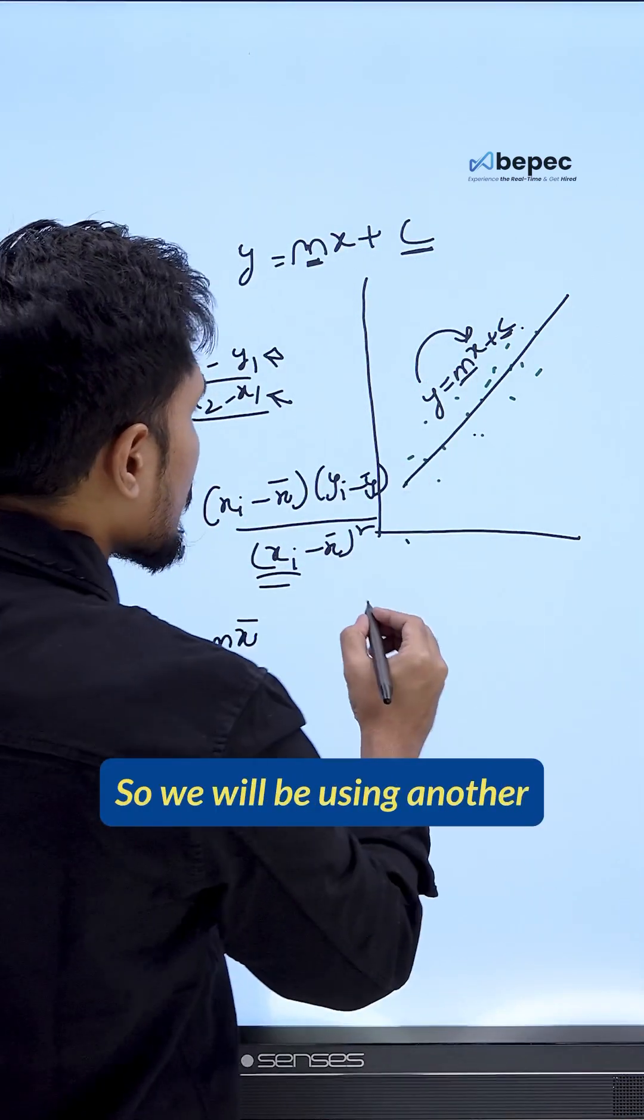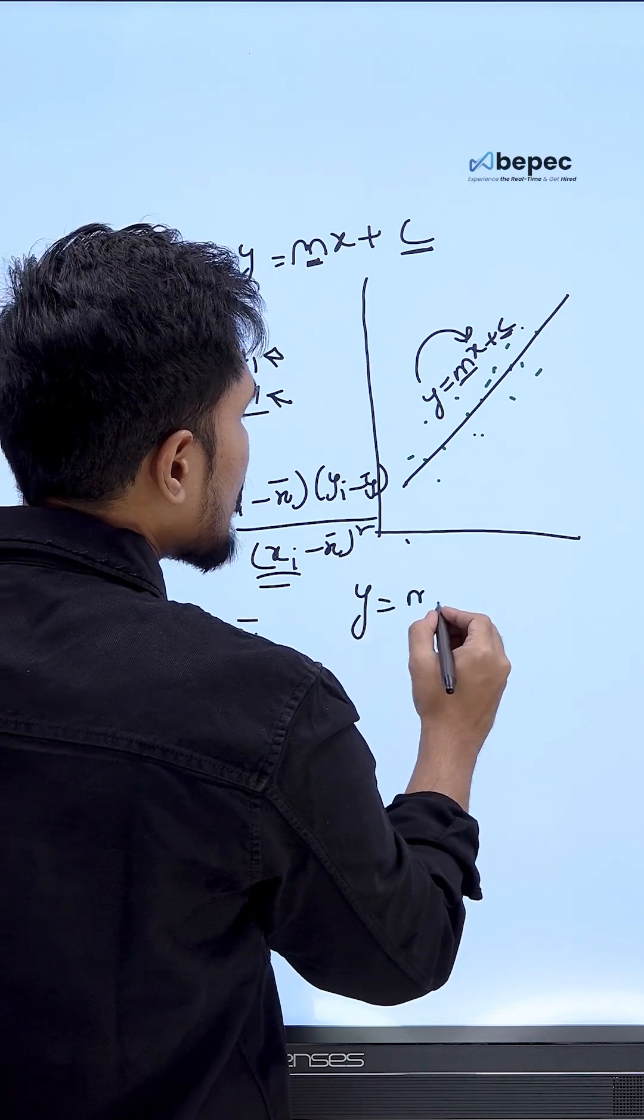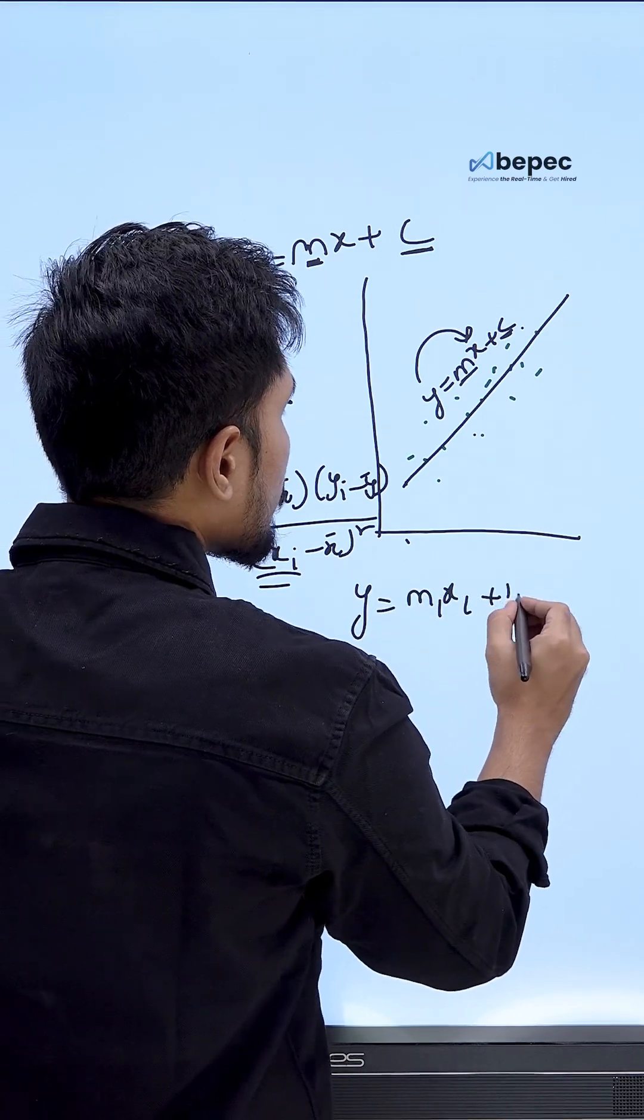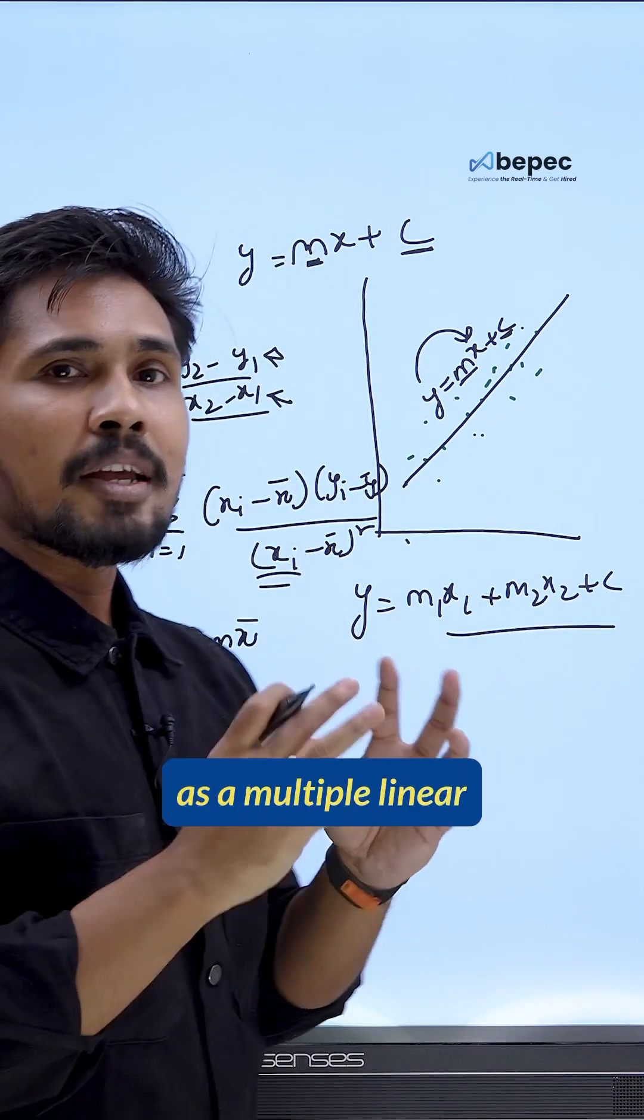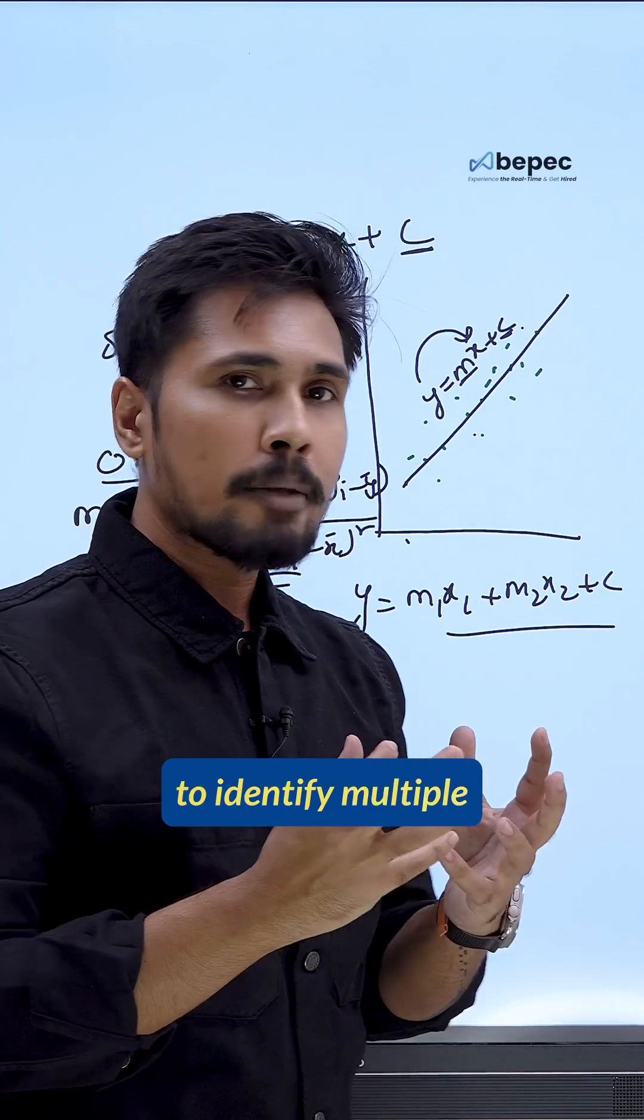We are calling it as y equal to m1 x1 plus m2 x2 plus c. So this is called as a multiple linear regression. If you want to identify multiple linear regression, this m values, if you are planning to identify them, we are able to write...